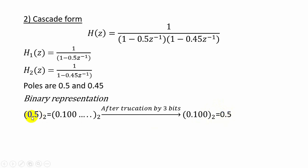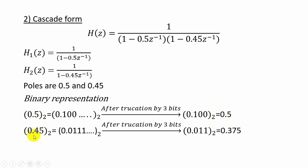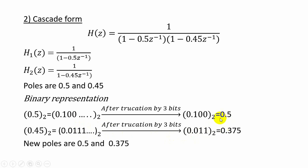So the original coefficient 0.5 remains as 0.5 after truncation. When truncating the next coefficient 0.45, the binary equivalent is 0.0111 and so on. When truncating to three bits it becomes 0.011, whose decimal equivalent is 0.375. So in cascade form, the new coefficients are 0.5 and 0.375, and the poles are also equal to 0.5 and 0.375.